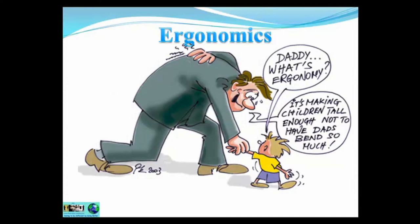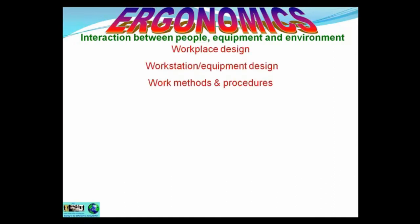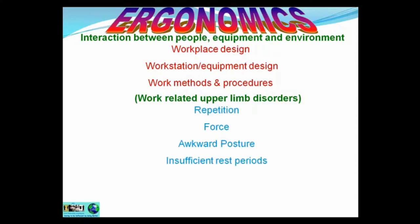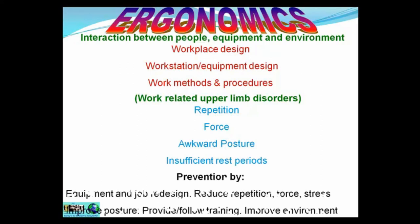Ergonomics — what's ergonomics? The actual definition is the interaction between people, the equipment they're working with, and the environment they're working under. It's all about workplace design, workstation and equipment design, and work methods and procedures. If a workstation is not ergonomically designed for the person using it, that can give rise to work-related upper limb disorders — due to repetition, using force, working at an awkward posture, or having insufficient rest periods. We can prevent that by equipment and job redesign, reducing repetition, force and stress, improving posture, and providing training and improving the environment.